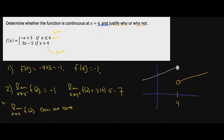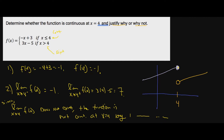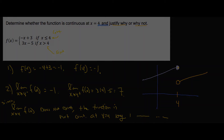Since the limit as x approaches four of f of x does not exist, the function is not continuous at x equals four by the definition of continuity. The point exists, but the limit does not exist, so they're not equal to each other. Since the function failed one of the three conditions, we know it's not continuous. Pretty tricky stuff, but hopefully you're getting the hang of it.